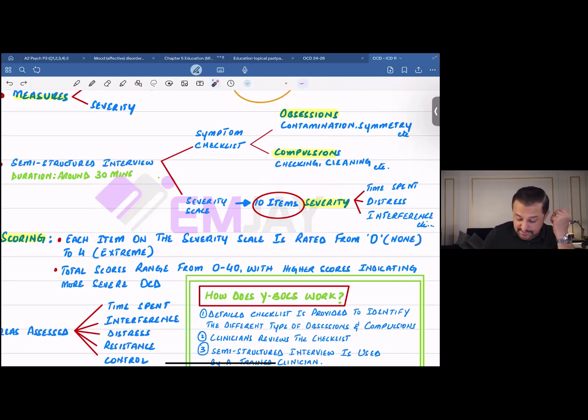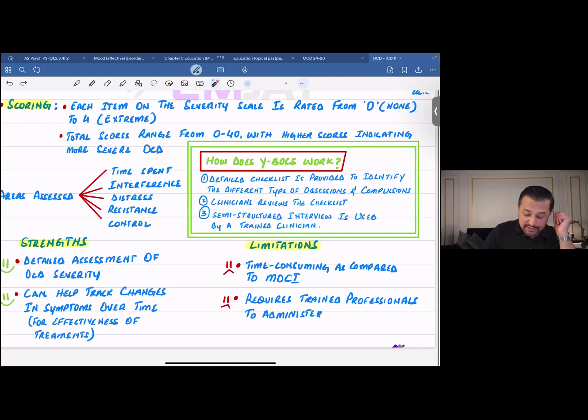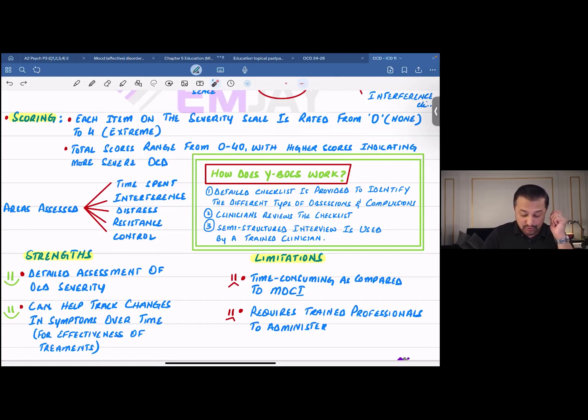Moving on towards the severity scale, there's a severity scale used which has 10 items. What sort of severity are we talking about? The amount of time an individual spends, the amount of distress they experience, and the extent to which these obsessions and compulsions interfere with their day-to-day routine. Each item on the severity scale is rated from 0 to 4, where 0 is none and 4 is extreme. The total score ranges from 0 to 40, with higher scores indicating more severe OCD.